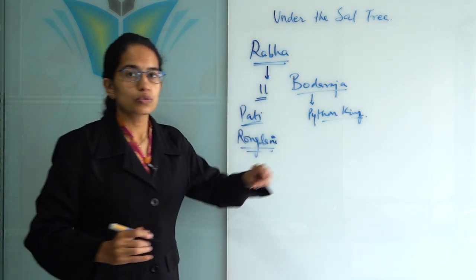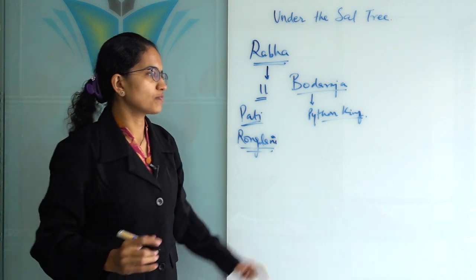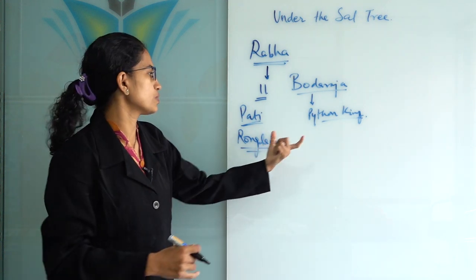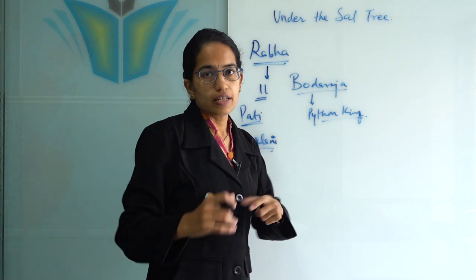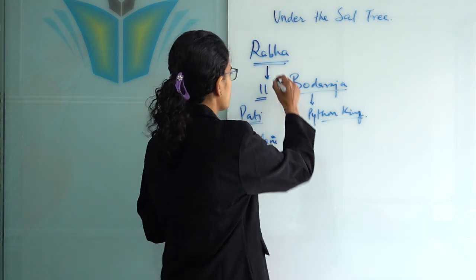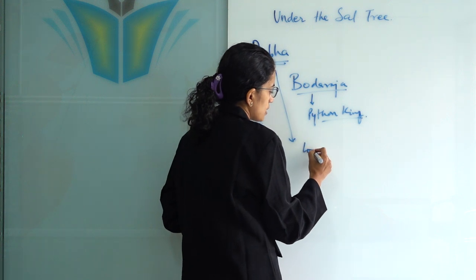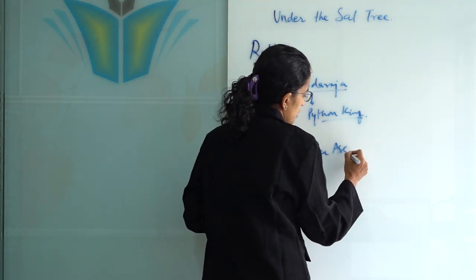The troupe performing this play was called Bodum Dupa. The Rabha community is predominantly seen in Lower Assam and in the regions of West Bengal.